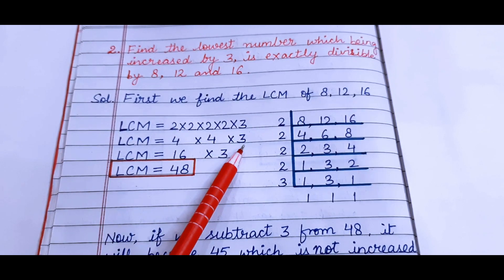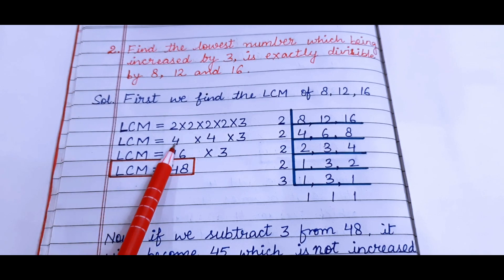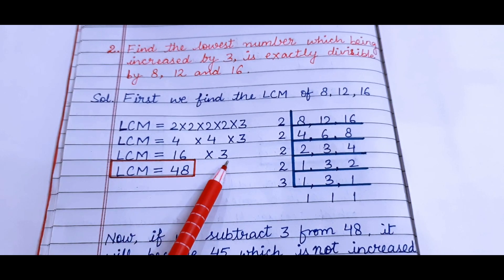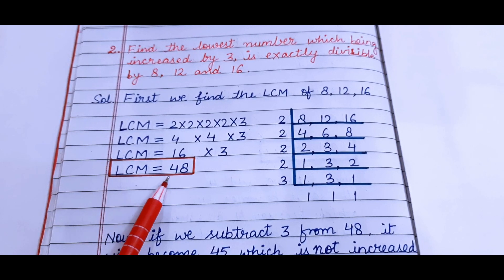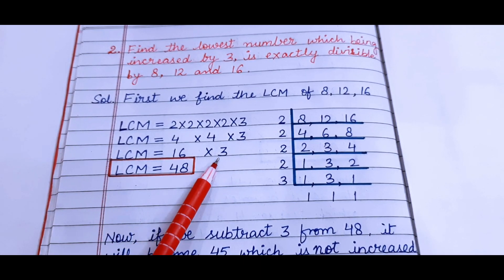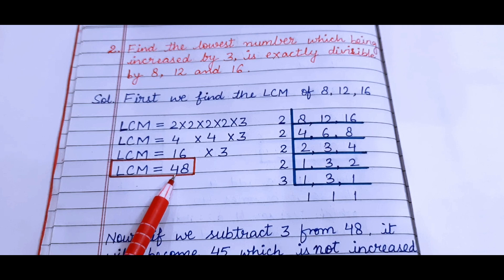LCM equals 2 twos are 4, 2 twos are 4 into 3. Now 4 fours are 16 into 3. So the LCM equals 16 × 3 = 48.